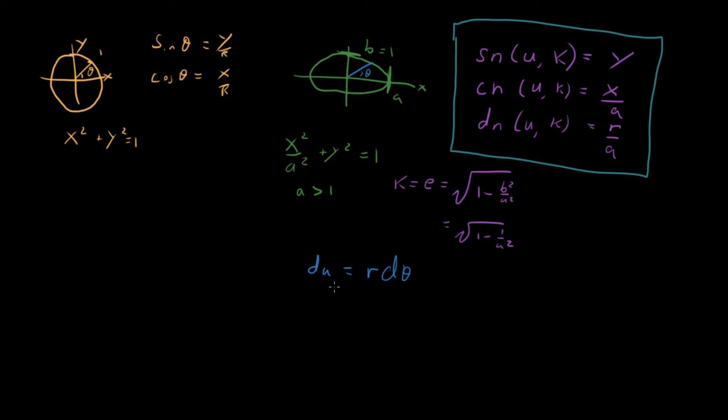But in the case where we do get back to a circle when r is just constant, then we see that du is equal to d theta. And so we just get back theta. And so this definition reduces to the circular case in the case that we actually have a circle.